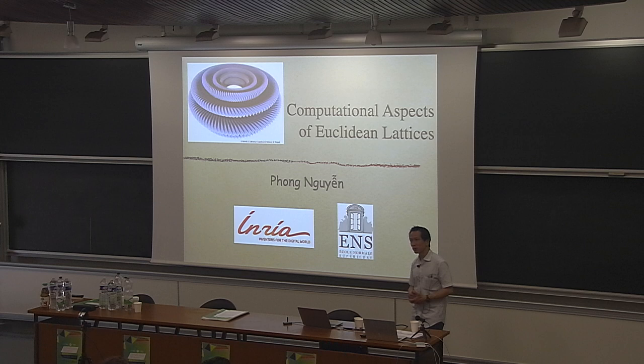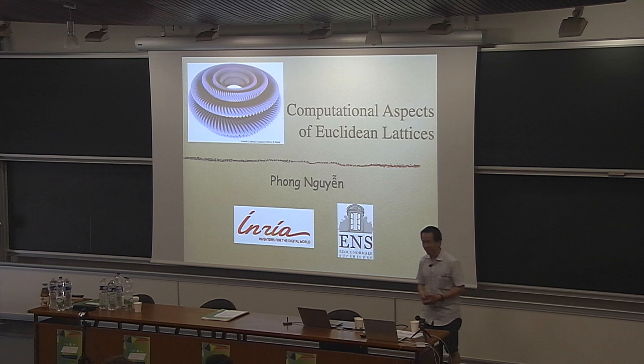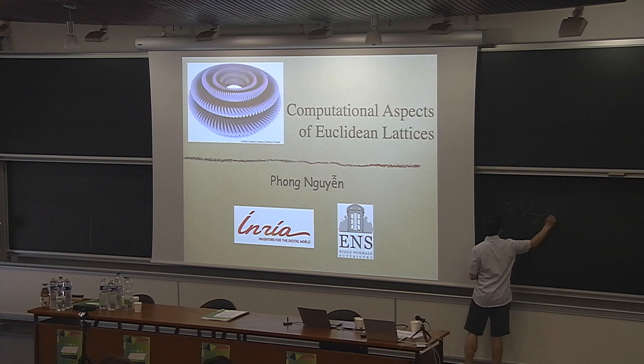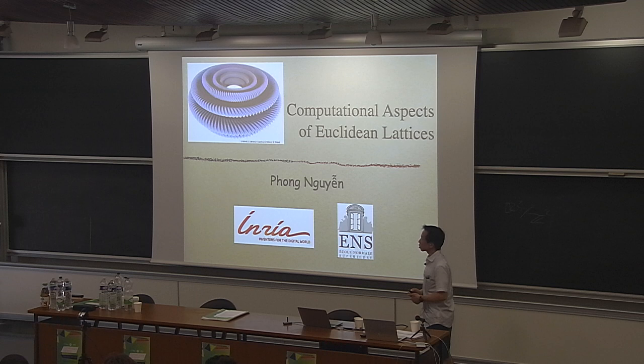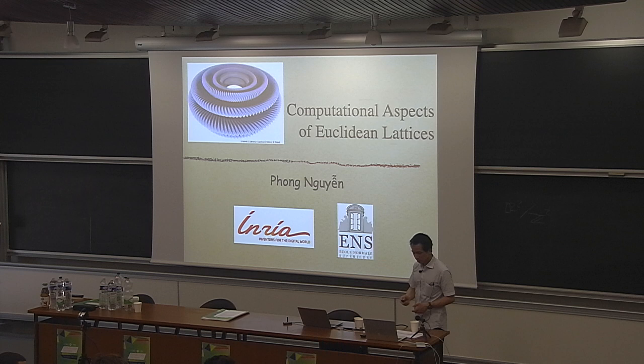Do you know what this picture is? Have you seen this picture before? So this is R2. This is an embedding of R2 divided by Z squared. I want to repeat that this picture is a C1 isometric embedding of the flat torus R squared divided by Z squared. And this was done by a team of French people 10 years ago. It's very nice.